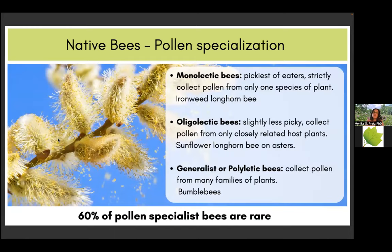Many of our native bees are pollen specialists. About 25% of native bees evolved to forage a specific plant. We call them pollen specialist bees. The pickiest eaters are the monolectic bees — they collect pollen from only a few or maybe one species, like the ironweed longhorn bee. Slightly less picky are oligolectic bees, collecting from related host plants, like the sunflower longhorn bee with asters. Most native bees are generalist, or polylectic bees, collecting from many plant families — bumblebees are one example.